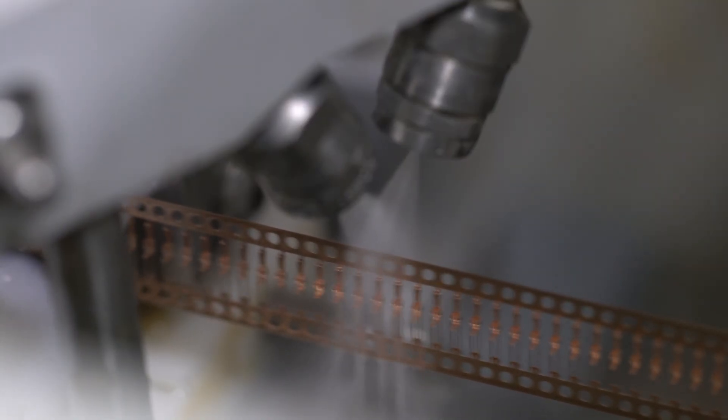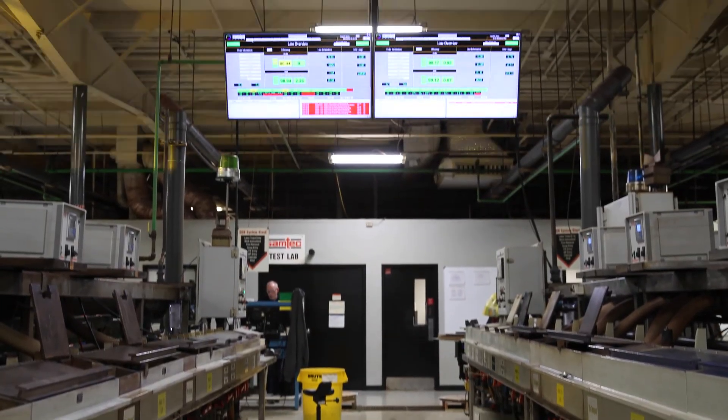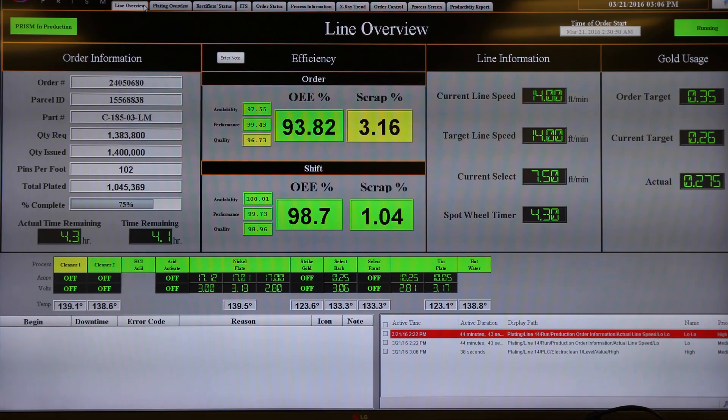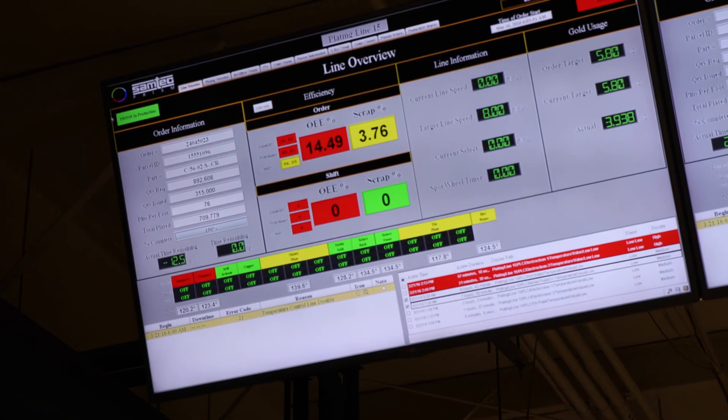The key to all of this is controlling how much we use, especially on gold. We have implemented a prism system that allows us to measure all the critical dimensions. We're talking about millionths of an inch in accuracy.